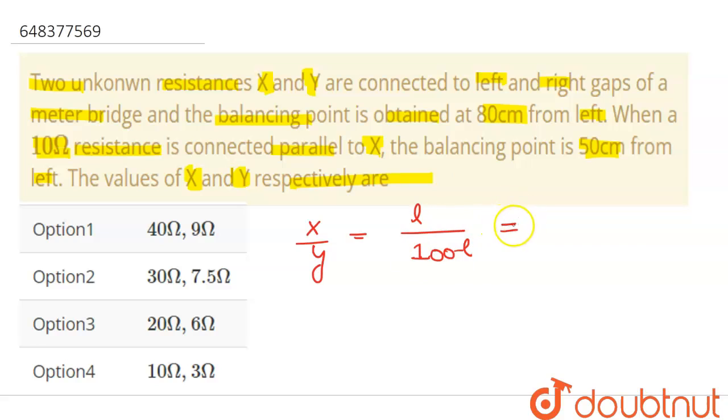We know l so we'll simply put the value 80 over 100 minus l. So x will be equals to 4y. Let's take this as equation 1.